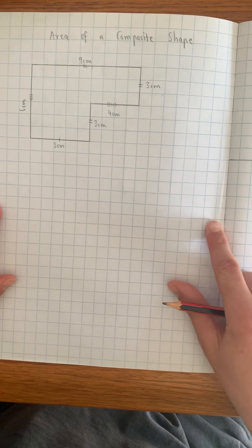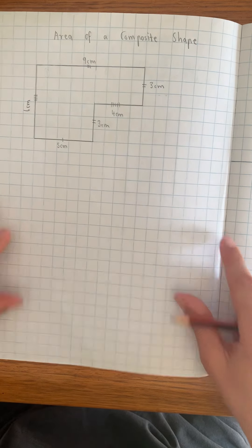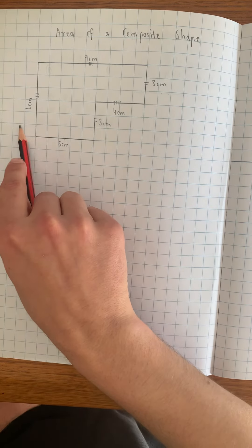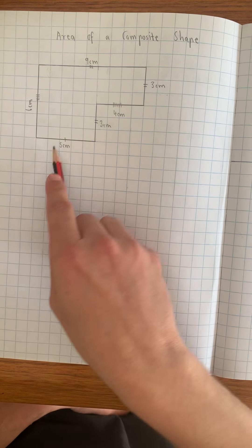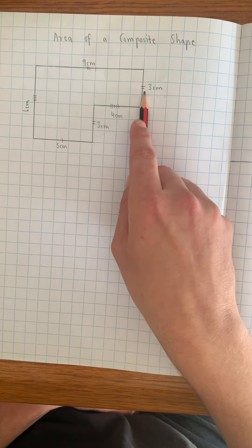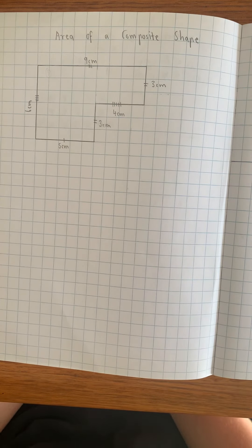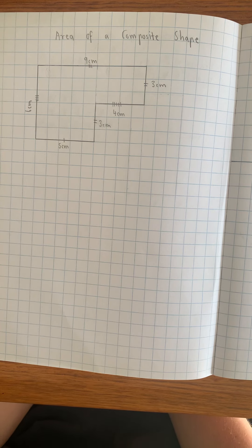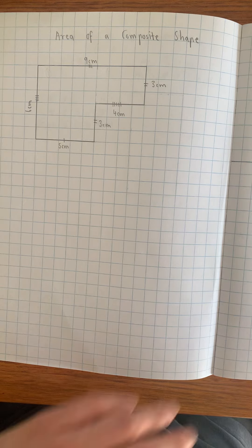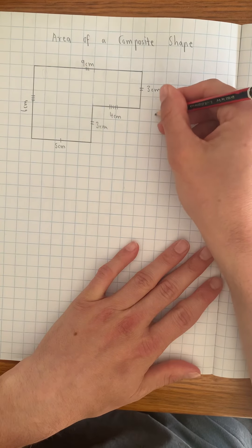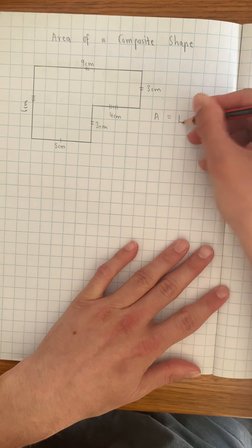So what I've got here is the exact same shape as before, so it's got the dimensions of six centimeters, five centimeters, three, four, three, and nine. And I'm going to talk to you about how we section the composite shape up so that we can use our formula, which is area equals length times width.